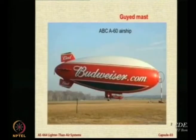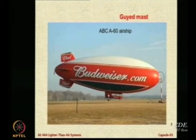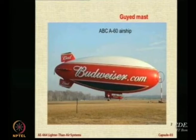You also have something called a guide mast, which is a central member that has ropes attached to the ground just like a tent pole — a main pole with ropes attached to the ground. A guide mast is normally used for medium airships. This is a medium airship called A60, which can carry I think 5 passengers.